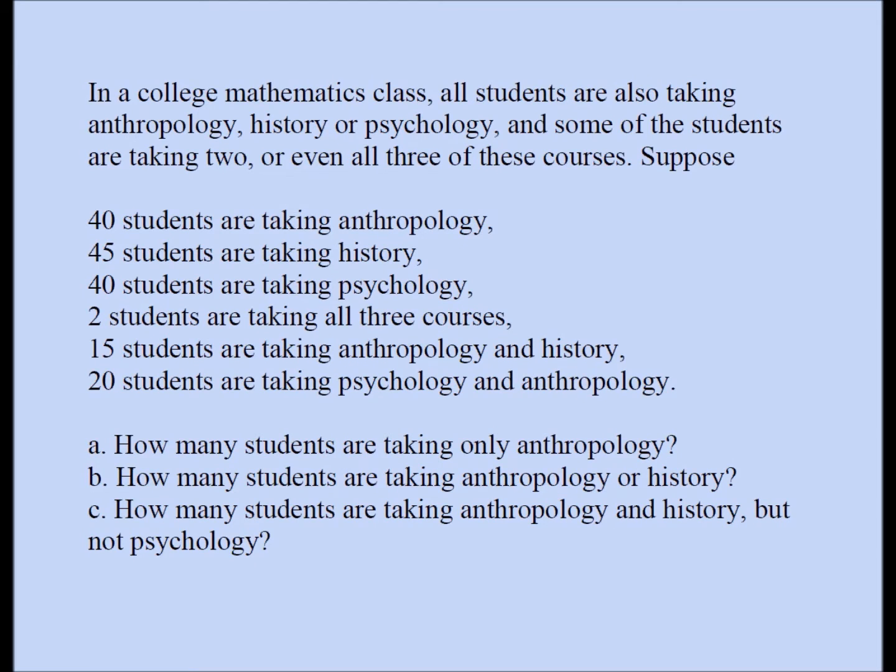In a college mathematics class, all students are also taking anthropology, history, or psychology, and some students are taking two or even all three of these courses. Suppose 40 students are taking anthropology, 45 are taking history, 40 are taking psychology, 2 are taking all three courses, 15 are taking anthropology and history, and 20 are taking psychology and anthropology. How many students are taking only anthropology? How many are taking anthropology or history? How many are taking anthropology and history but not psychology?